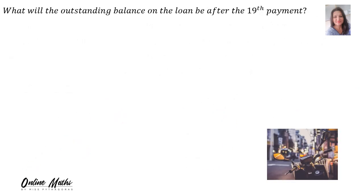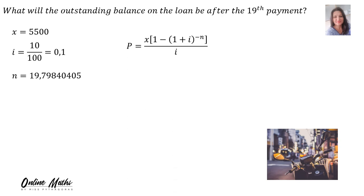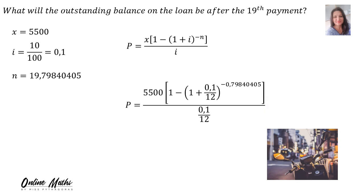The next question is: what will the outstanding balance on the loan be after the 19th payment? The summary: X is 5,500, I is 0.1, and now we know N is 19.798. Into the present value formula, we substitute all those values. The important thing here is on the negative N — when calculating the outstanding balance, it's how many payments are left. We ignore the 19 because those are payments already made, and use only the 0.798.